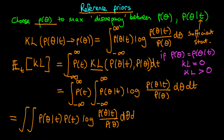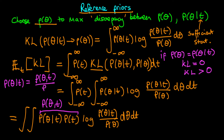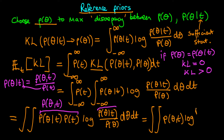I know this looks very mathematical, but we're getting there. What we notice is that the product P of theta given T times P of T is just the joint distribution of theta and T — because the conditional law of probability says P of theta given T equals the joint P of theta and T over P of T, which we can rearrange. Similarly, we can rewrite the ratio term as P of theta and T divided by P of T. What we obtain overall is the integral of P of theta and T times the log of P of theta and T over P of theta times P of T, integrated with respect to theta and T.